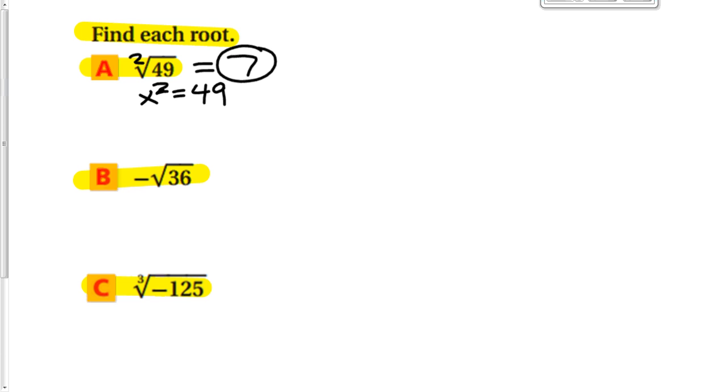Letter B. Letter B is going to come out negative no matter what. There's a negative hanging out front. And we're going to ask ourselves this question. What squared equals 36? 6 times 6 gets me to 36. And that's negative because there's a negative sitting out front there.